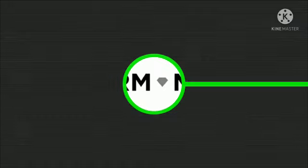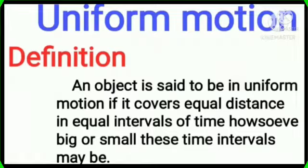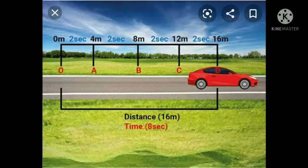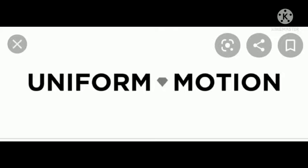First, Uniform Motion. An object is said to be in uniform motion if it covers equal distance in equal intervals of time, howsoever big or small these time intervals may be. In this picture, we can see that the car travelled 4 meters in 2 seconds. The total distance car travelled is 16 meters and time is 8 seconds. So, we can say that the car performed uniform motion.